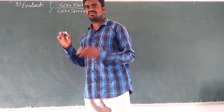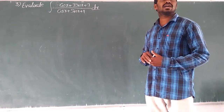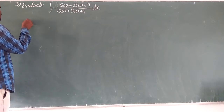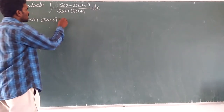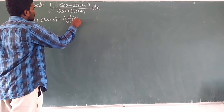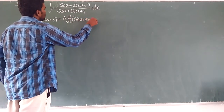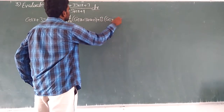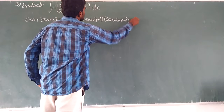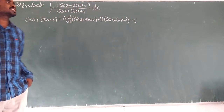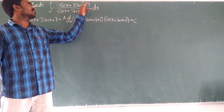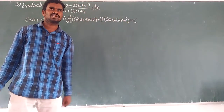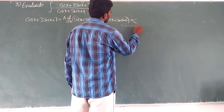We actually have 4 problems of the same type. This one follows the same process as the previous question. The numerator, cos x + 3 sin x + 7, can be written as: A into d/dx of (cos x + sin x + 1), plus B into (cos x + sin x + 1), plus C. We must include C here because constant terms are present — that's the additional part compared to the second problem.